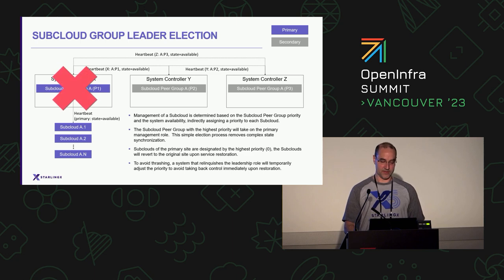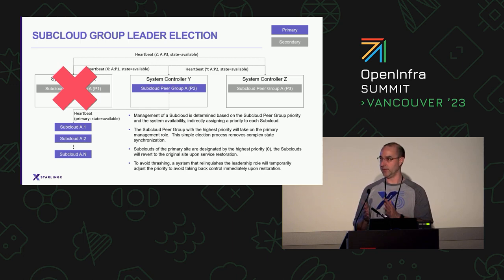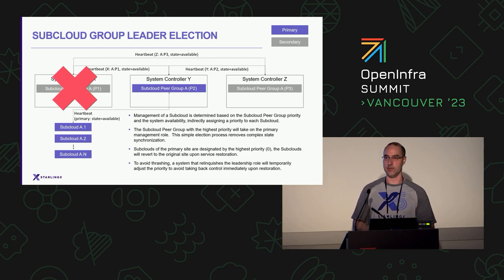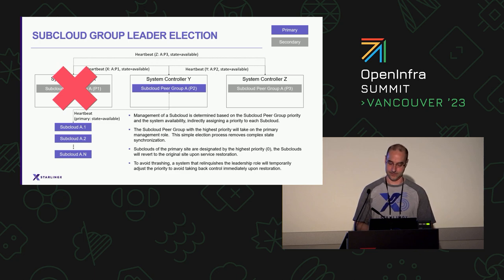If one site goes down it's a very simple algorithm to move ownership over to another system controller. That primacy transfer is transparent to the subclouds — they'll just start reporting their availability from that new system controller. From their perspective there's no change in operational state, but the operator can continue to provide the management function.